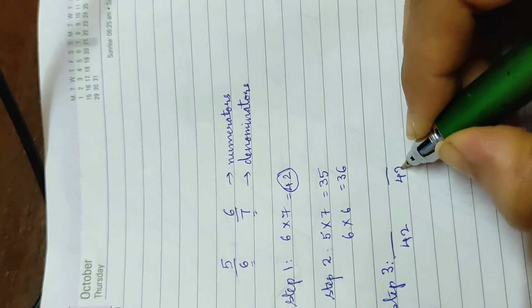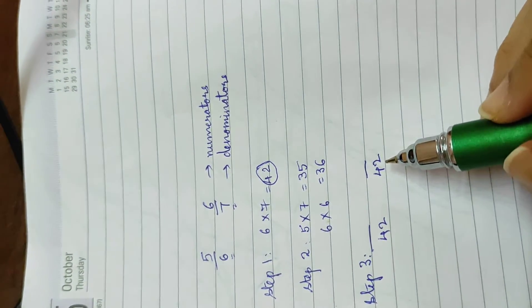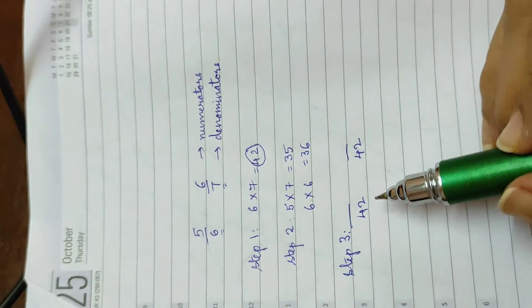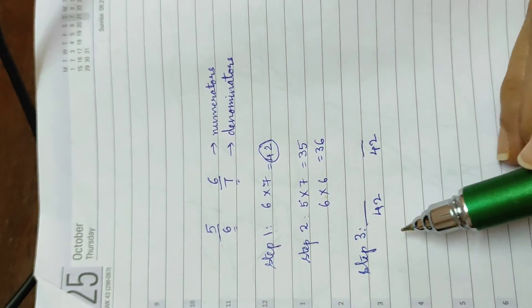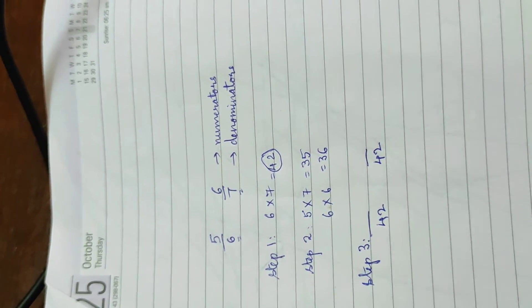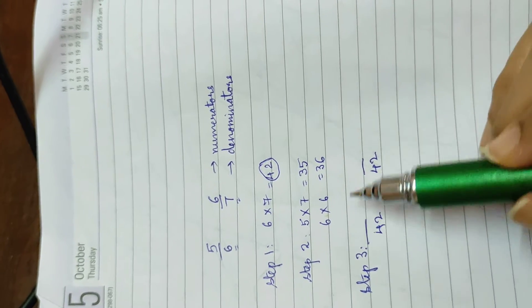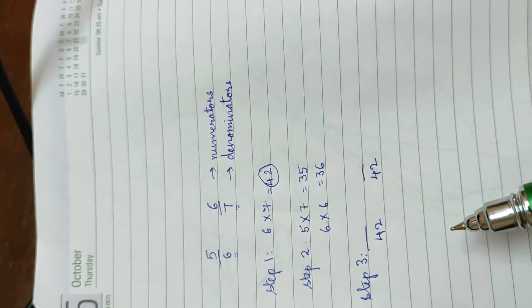It helps us by making the denominator same. So we know whatever it is, a cake or a chocolate or whatever, it's cut into 42 pieces. Once we know that it's cut into the same number of pieces, the numbers become easy to compare.